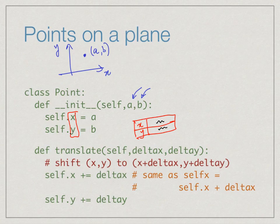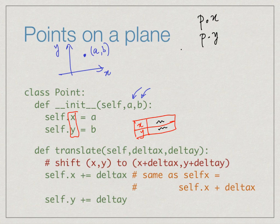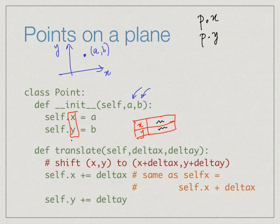If we have a generic point p, then p dot x and p dot y refer to the values x and y associated with point p. Inside the class definition, self refers to the attribute within this particular object. For p1, when in the context of p1 self is p1; if we have a different point p2, in the context of p2 self is p2. Every function inside a class definition should always have self as the first argument.